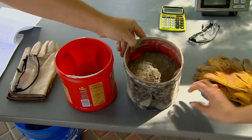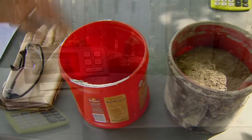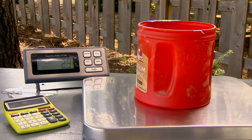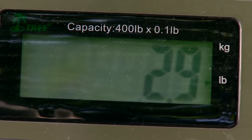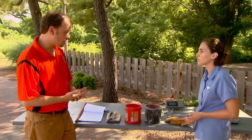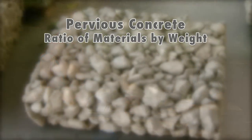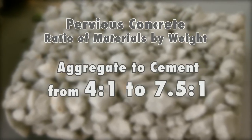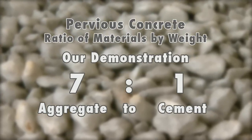We also have Portland cement and water, and we've pre-measured all of these for our demonstration. You're going to need a scale to measure things out because the exact amounts are pretty important. There are ratios to figure out how much of each material to add. On the aggregate-to-cement ratio, it can range from about four-to-one to about seven-and-a-half-to-one by weight. We're going to do a demonstration here at seven-to-one, which is on the higher end.